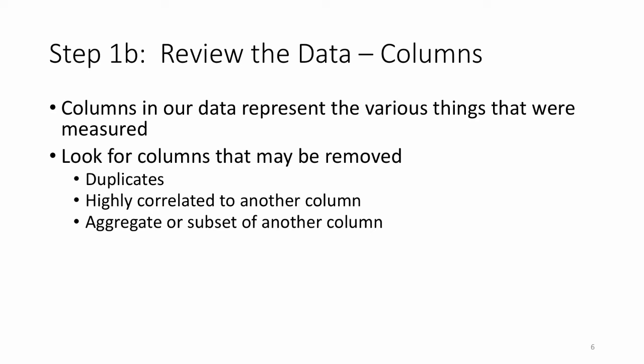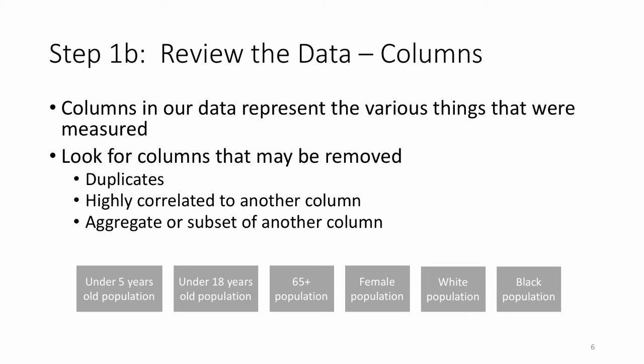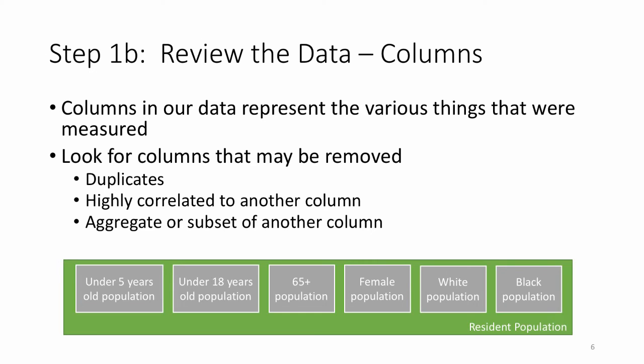The second part would be the idea of removing columns or variables that were measured either because they're duplicates, they're highly correlated to another column, or they're an aggregate or subset of another column. If you look at this particular data set you can see here there's six different variations of population that were included. And so instead of keeping those six variations of population we elected to remove those and keep one variable which is just general population. You lose some resolution in your data but for the purposes of what we're doing here it's sufficient.